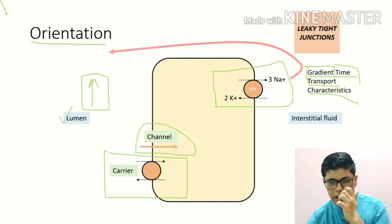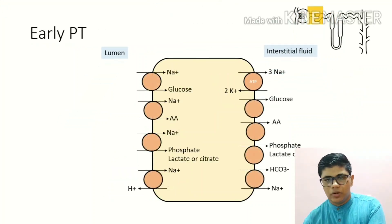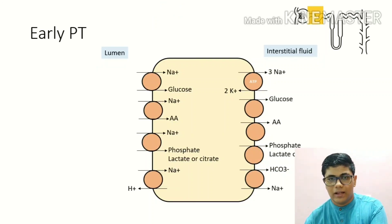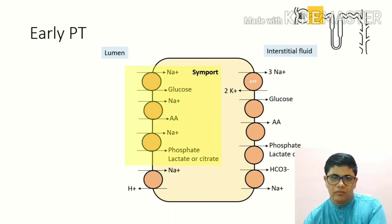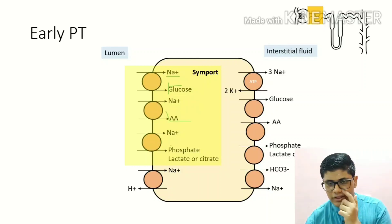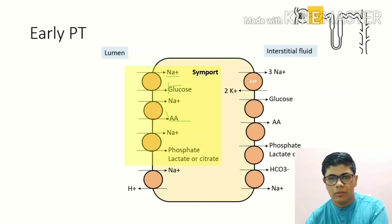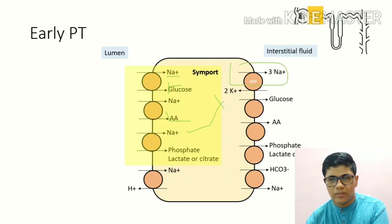What limits sodium reabsorption? It is the back-leak of sodium via leaky tight junctions present in the proximal tubule. In contrast, the distal convoluted tubule has tight tight junctions that prevent back-leak. In the early proximal tubule, on the luminal membrane there are many symporters that co-transport glucose, amino acids, phosphate, lactate, or citrate along with downhill movement of sodium — this is secondary active transport, driven by sodium deficiency created by Na-K-ATPase. The transported substrates then leave the cell via facilitated diffusion on the basolateral side.